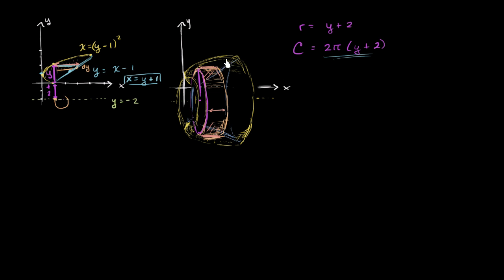So the area is going to be the circumference times this dimension, times this dimension. So it's going to be, let me write this. The area of one of those shells is going to be 2 pi times y plus 2 times the distance between the upper function. So y plus the distance between the upper function, y plus 1, x equals y plus 1, and the lower function, x equals y minus 1 squared. Y minus 1 squared, I'll put the parentheses in that same color.